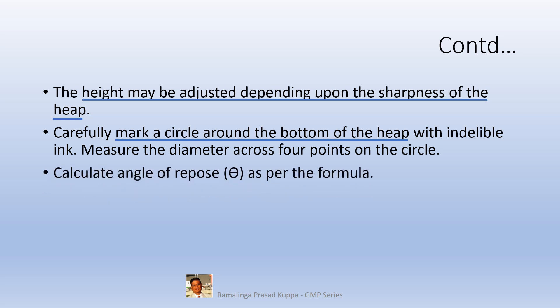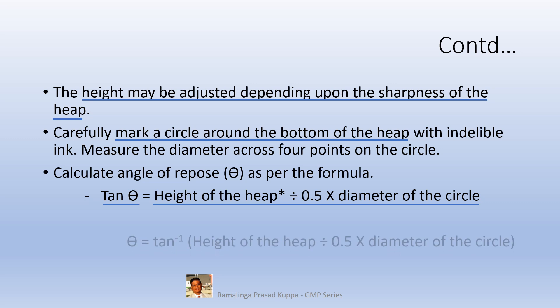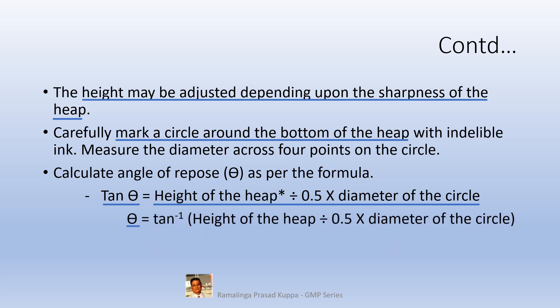Calculate the angle of repose theta as per the formula: tan theta is equal to height of the heap divided by 0.5 times the diameter of the circle, which is the radius. So theta will be tan inverse of height of the heap divided by 0.5 times the diameter of the circle. In this, the height of the heap is a fixed height of the funnel.